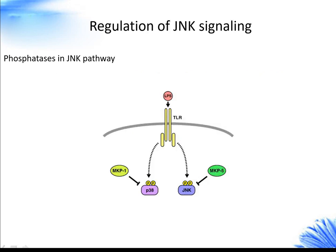To date, the reported JNK phosphatases are the dual-specificity MKPs. MKP7 and VHR are JNK phosphatases that also dephosphorylate P38α and P38β. Other MKPs with some reported activity toward JNKs are DUSP2, MKP6, and MKP1.